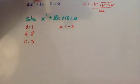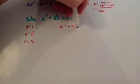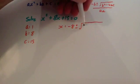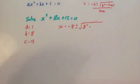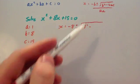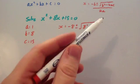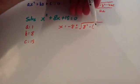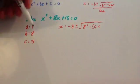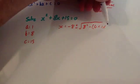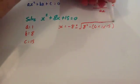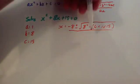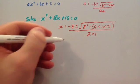And c is the constant, which is 15. Now let's substitute those into the quadratic formula. So x equals minus 8 plus or minus the square root of b squared — that's 8 squared — minus, and I always put the 4ac part in brackets. It comes in useful whenever you've got negatives for a, b, and c. So that's 4 times a, which is 1, times c, which is 15, and then we divide by 2a, so 2 times 1.